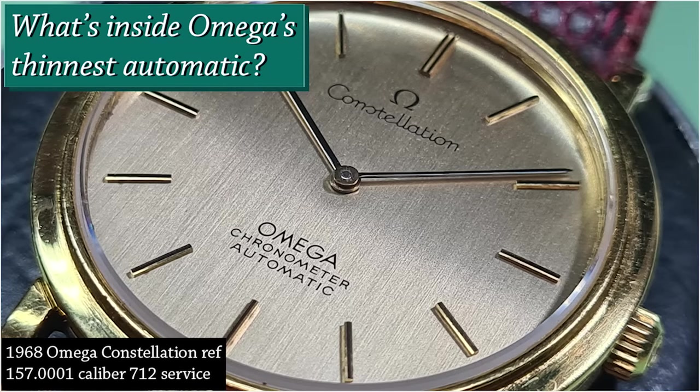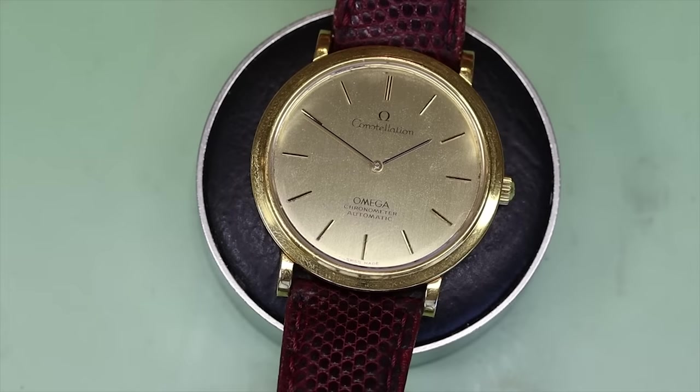Hello boys and girls, cats and dogs, lovers and lovies. Welcome back to the channel. Today we're gonna look at Omega's thinnest automatic, an Omega Constellation with a caliber 712. So let's get going.